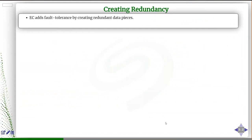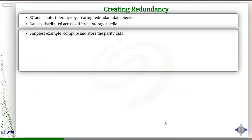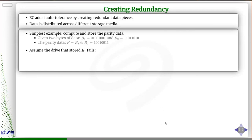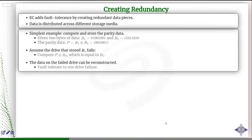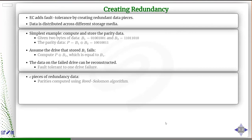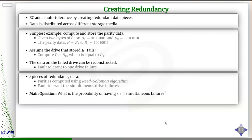The basic idea: you create redundancy and distribute data pieces across different storage devices. The simplest method is XOR parity — if you have bytes B1 and B2, you XOR them bitwise to create parity P, store B1, B2, and P on three separate devices, and if one fails you reconstruct it via XOR. You can extend this idea to more redundancies using the Reed-Solomon algorithm, creating c pieces of redundancy protecting against c simultaneous failures. The main question becomes: what is the probability of having c+1 simultaneous failures?